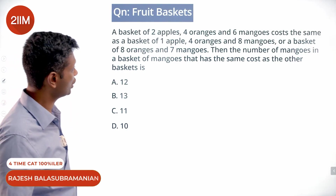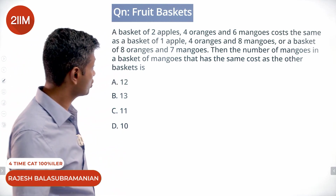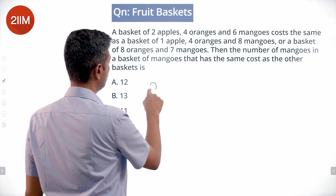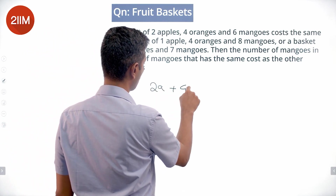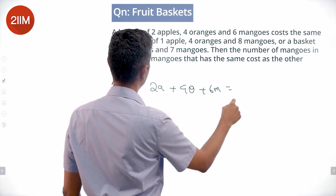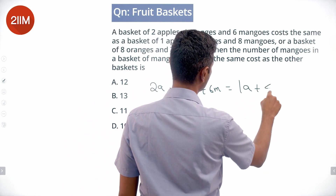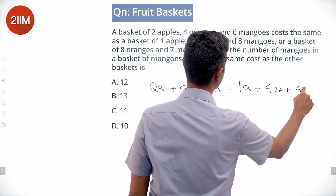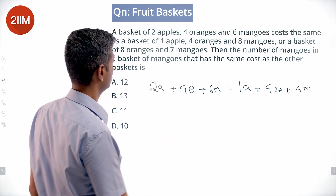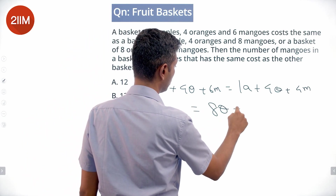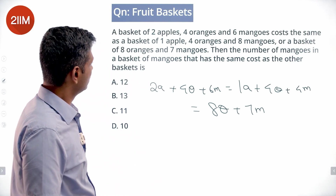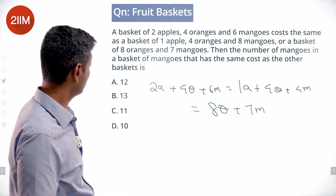A basket of two apples, four oranges, and six mangoes costs the same as a basket of one apple, four oranges, and eight mangoes. So: 2a + 4o + 6m = 1a + 4o + 8m. Also, a basket of eight oranges and seven mangoes equals eight oranges plus seven mangoes — we need to find the number of mangoes in a basket that has the same cost.